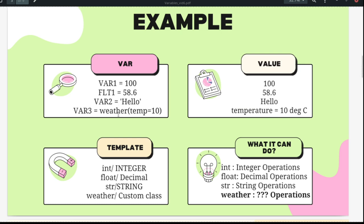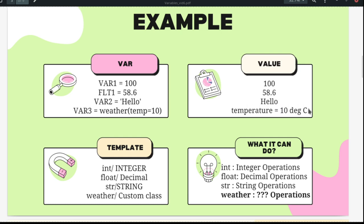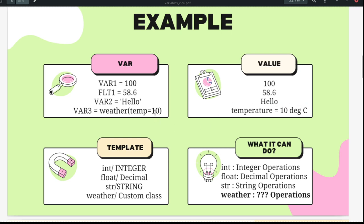What happened inside this weather object that produced the output 'temperature equal to 10 degrees Celsius'? This is what I mean when I say that based on the input given to the variable, the variable itself can have certain different capabilities. This kind of capability can be programmed in Python, and that is called using templates.